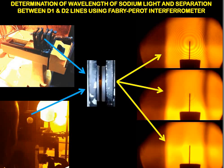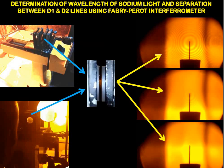So, two points: number one, determination of average wavelength, and number two, separation between the doublet. What we will be using is the Fabry-Perot interferometer. This is the setup. In the heart of this interferometer is this setup, as you can see.